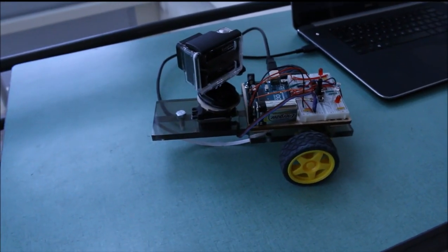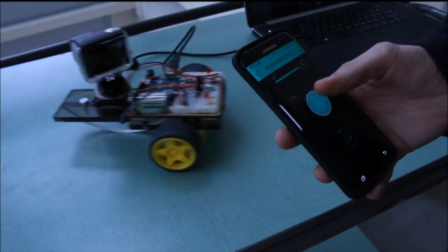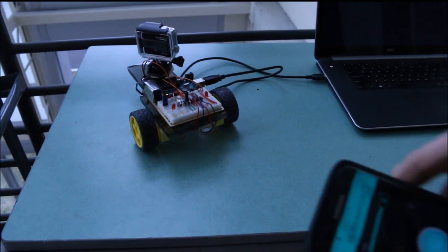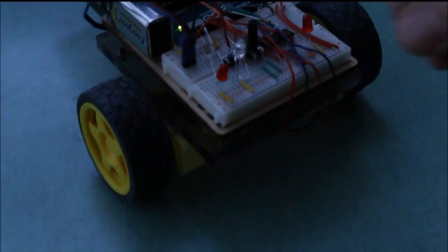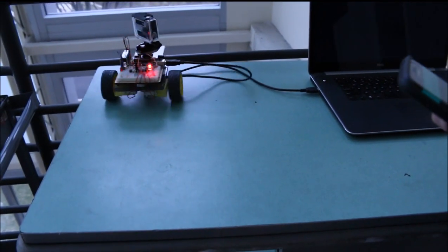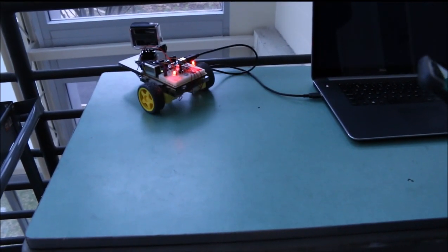And then the last thing, the coolest part I think, using the joystick on here, I can move the robot forwards, backwards. I can rotate left and right. And then if I press a button on here, you'll see the brake lights come on. So that way when I'm in reverse or forwards, left, right.